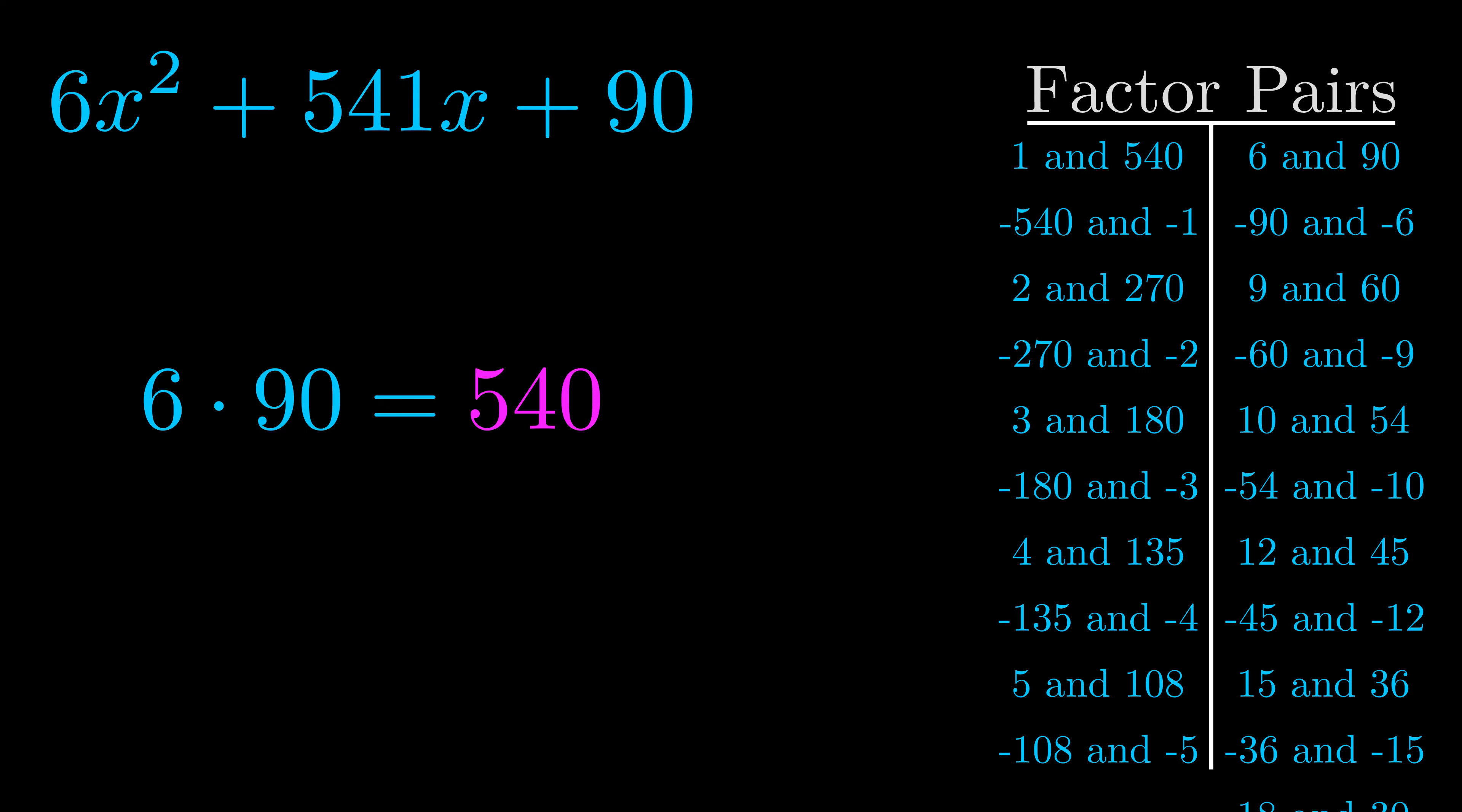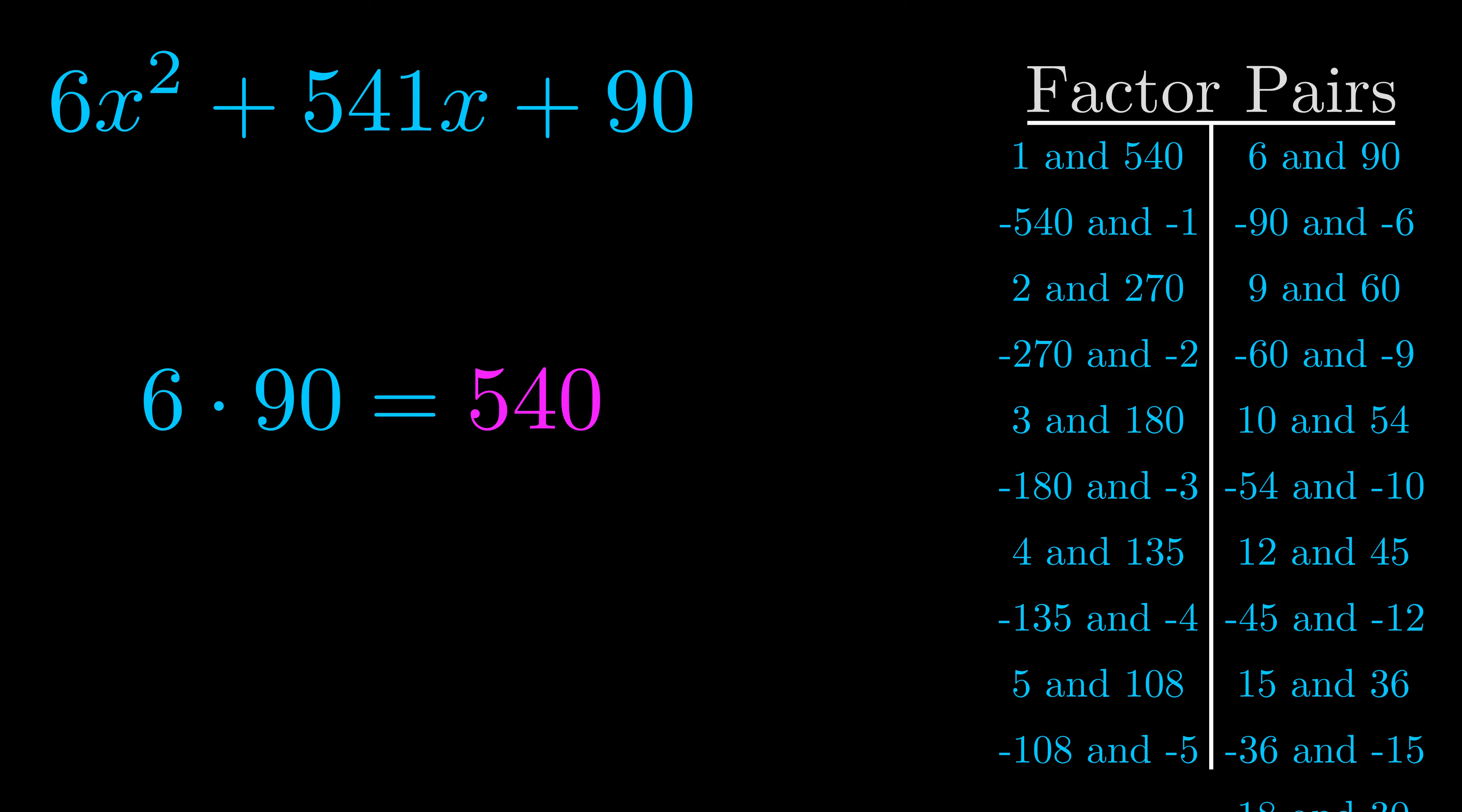Now once you have these factor pairs, the goal is to find which of these pairs adds to the b value. The b value is the coefficient on the x term. That's the middle term, the one that we haven't done anything with yet.